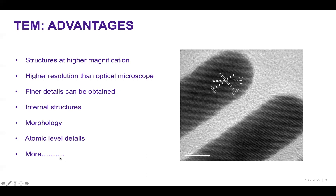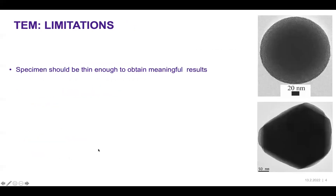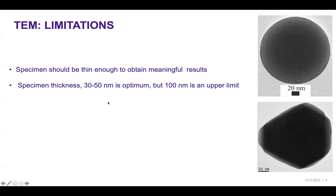We can see much more, such as the elemental composition of nanoparticles. However, there are limitations. One of them is that the sample should be thin enough to obtain meaningful results. Specimen thickness of about 30 to 50 nanometers is optimum, but 100 nanometers is the upper limit.